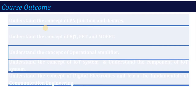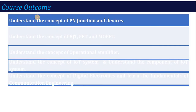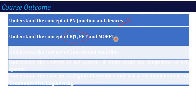After the book, if I talk about the course outcomes: the first objective is to understand the concept of PN junction and related devices — which configurations and circuits use PN junction diode and what are the different types of special diodes. The second course outcome is that you will understand the concept of BJT, FET, and MOSFET. These are very important terms — when electronics engineering students go for placement interviews, they will be asked what BJT means, what is FET. These basics are very, very important.